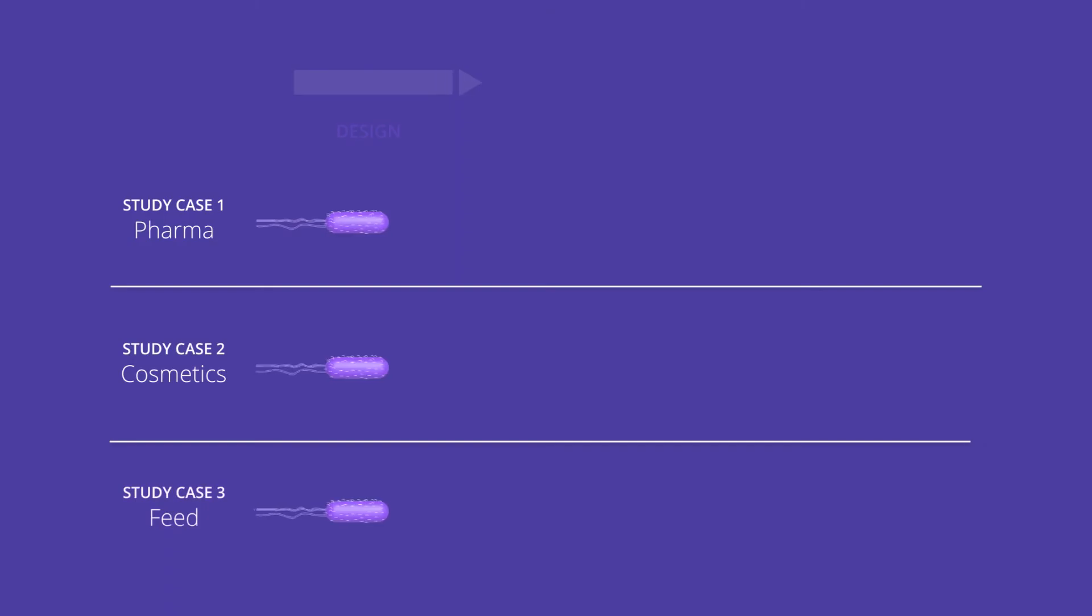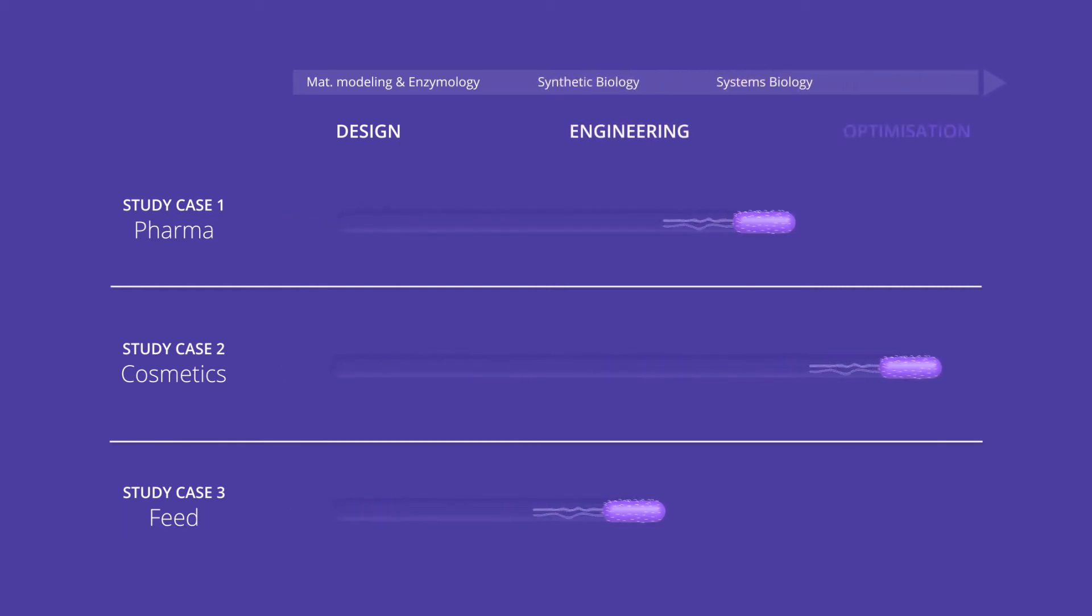Each study case has gone through a three-step process and the second use case, production of vitamins and pigments for cosmetics, is the most advanced having demonstrated full viability for commercial exploitation.